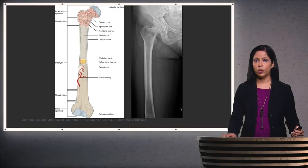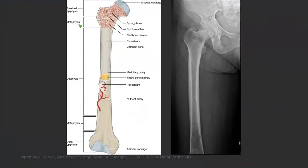Let's first review some bony anatomy. Here we have a diagram and an x-ray of the femur. The bone has what's called an epiphysis at the very tip of it. The next portion is called the metaphysis, and then the long portion of the bone is called the diaphysis. On the x-ray, the epiphysis is the very top of the femoral head, the next portion is the metaphysis, and the long shaft is the diaphysis.